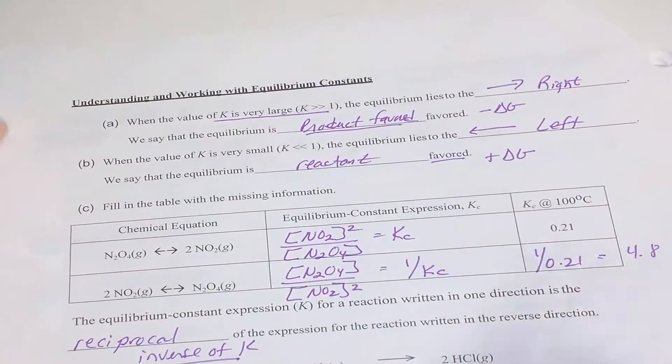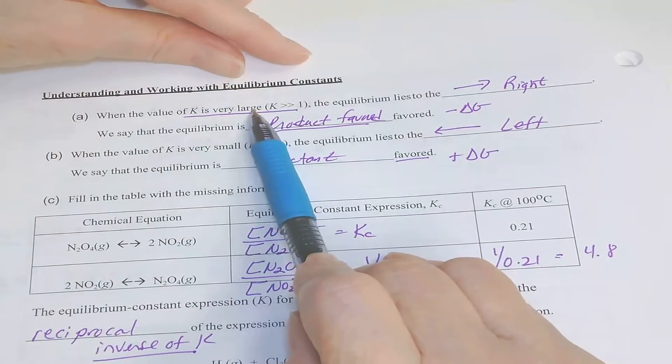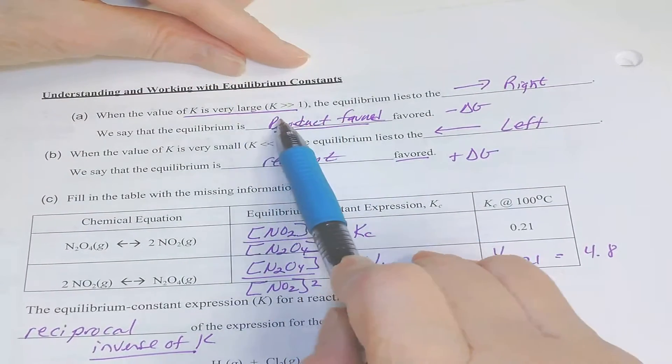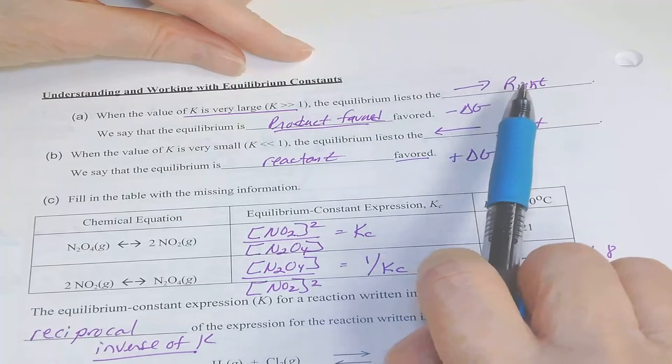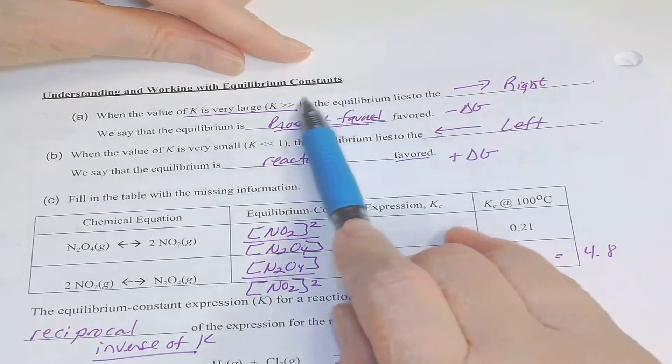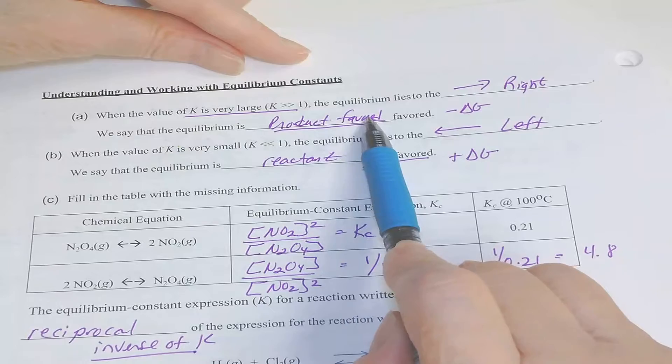So looking through your notes, you want to understand why when K is much larger than 1, your equilibrium lies to the right, making your reaction product favored.